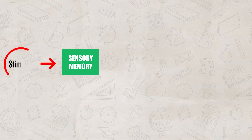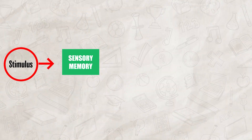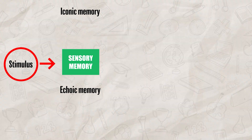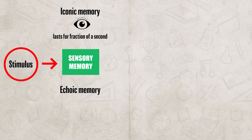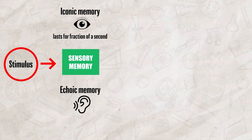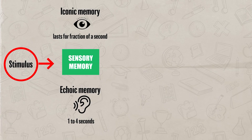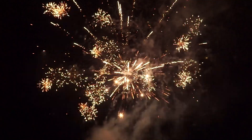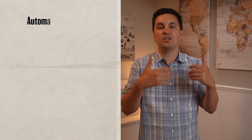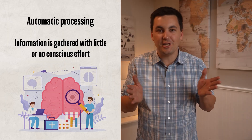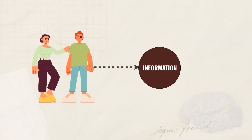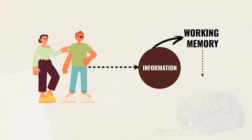Up first, we have sensory memory — this is where you first encounter information from the environment. Here we find iconic memory and echoic memory. Iconic memory is our visual sensory memory, lasting only a fraction of a second, while echoic memory is our auditory sensory memory, lasting anywhere between one to four seconds. Iconic memory is why you can see an afterglow of a sparkler, and echoic memory is why you can remember the last couple of words someone said around you, even if you weren't fully paying attention. At this stage, automatic processing takes place, meaning the information gathered here is done without really any conscious effort.